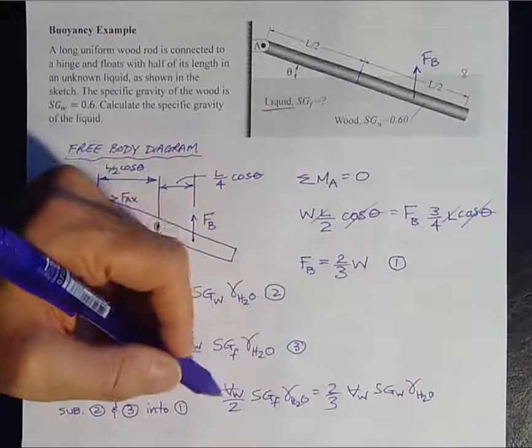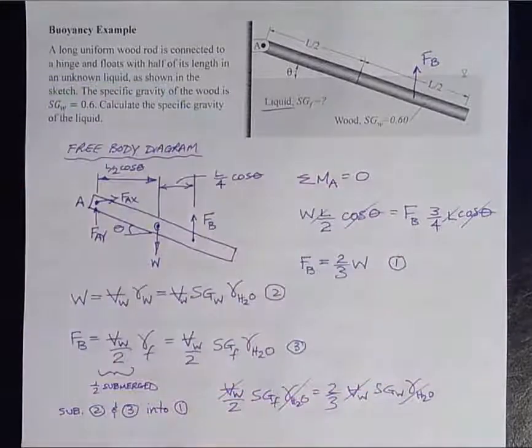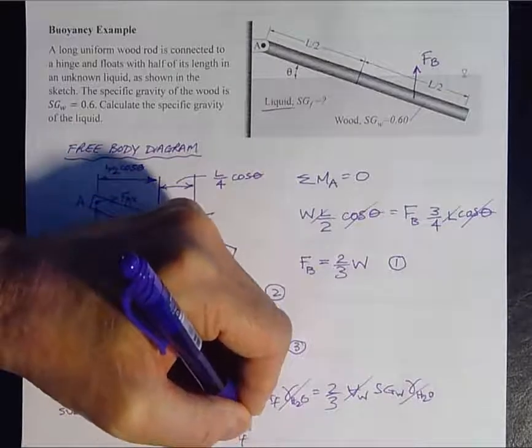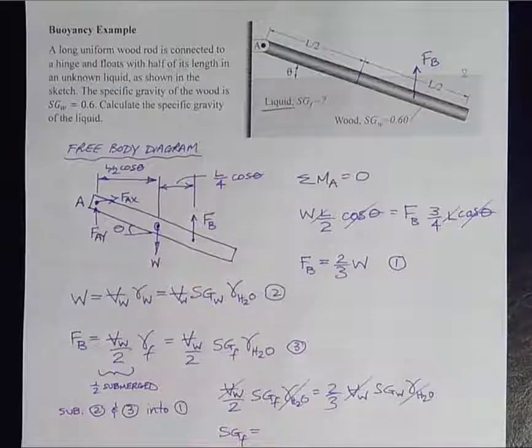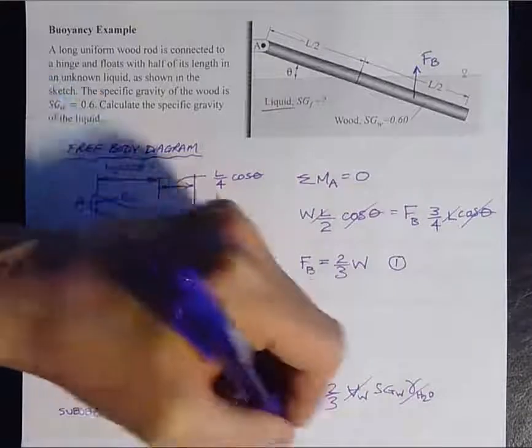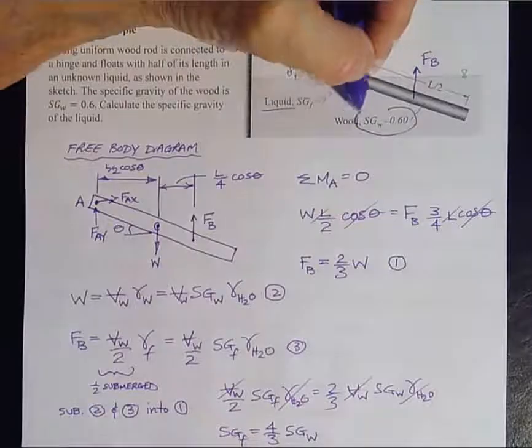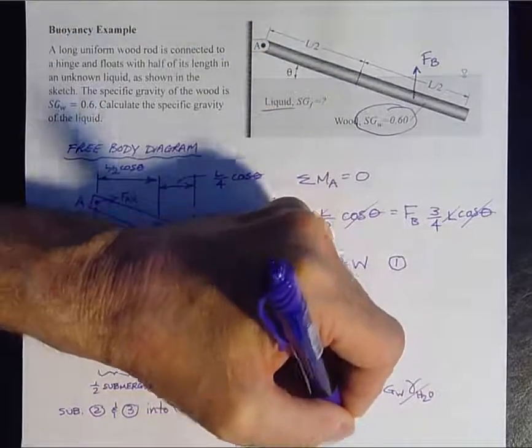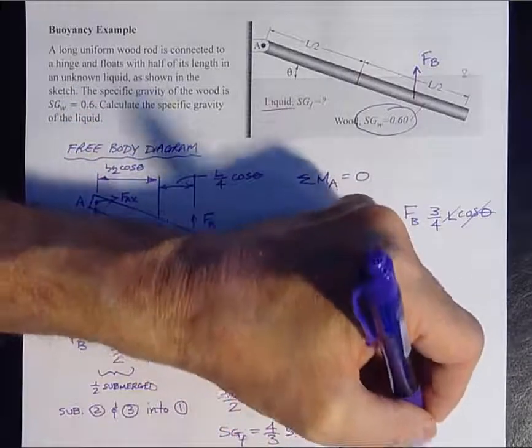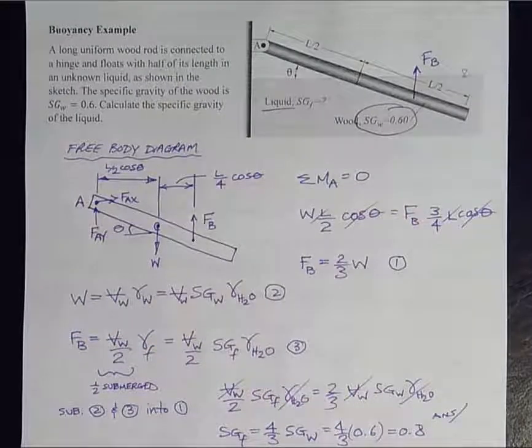Now we can see that the volume of the wood cancels out, the specific weight of the water cancels out, and we get the Sg of the fluid equals, what's that going to be? That's going to be 4 thirds, 4 thirds times the specific gravity of the wood. And we're told up here that the specific gravity of the wood is 0.6. So 4 thirds times 0.6 equals 0.8. And that's the answer.